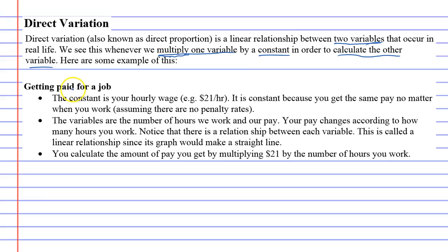Getting paid for a job. We talked about something being a constant, and the constant is your hourly rate of pay. Let's say, for example, you get $21 an hour. It's constant because it doesn't really change. Each day or each week, you're still getting paid $21 an hour, assuming there's no penalty rates or public holidays. So that's our constant.